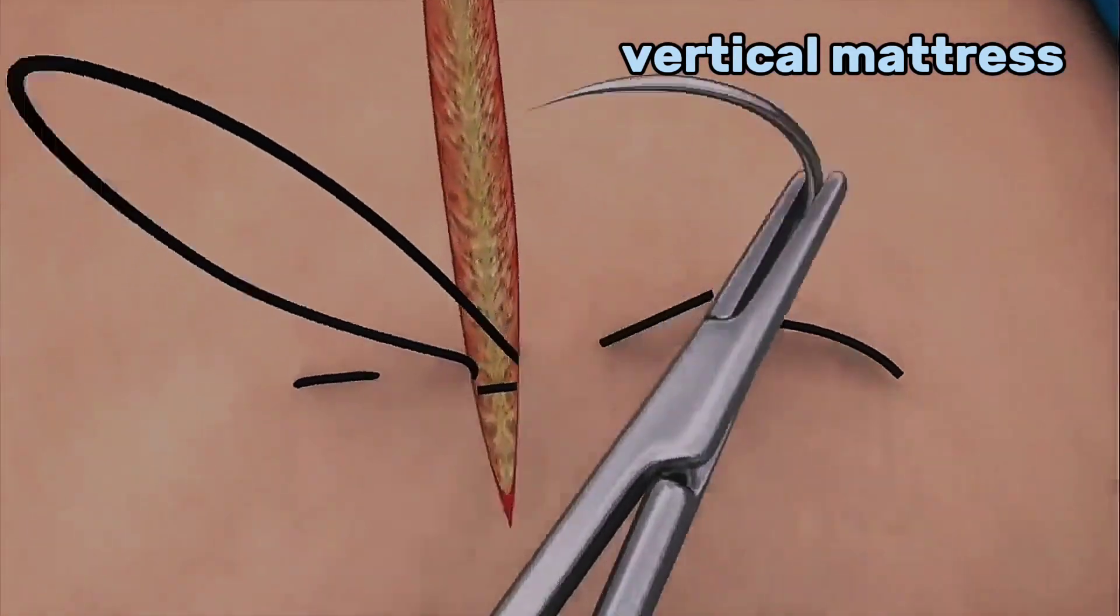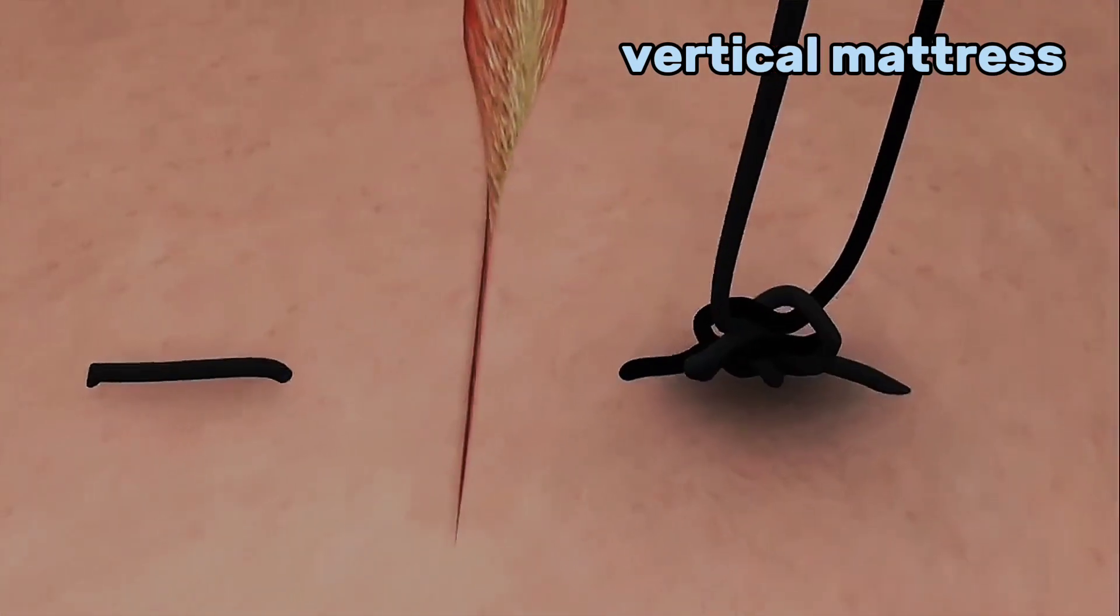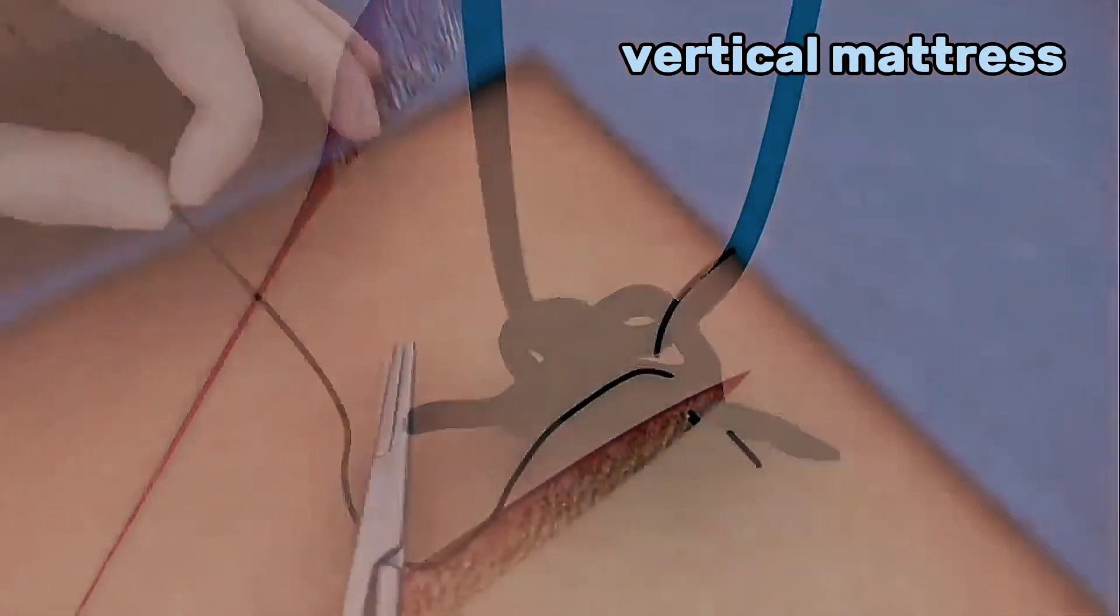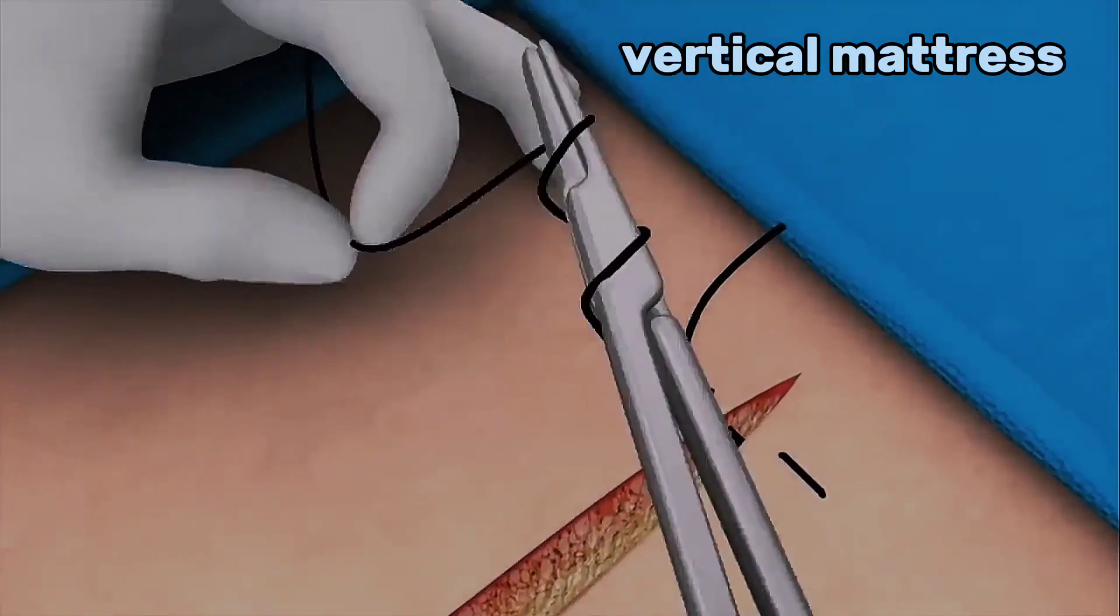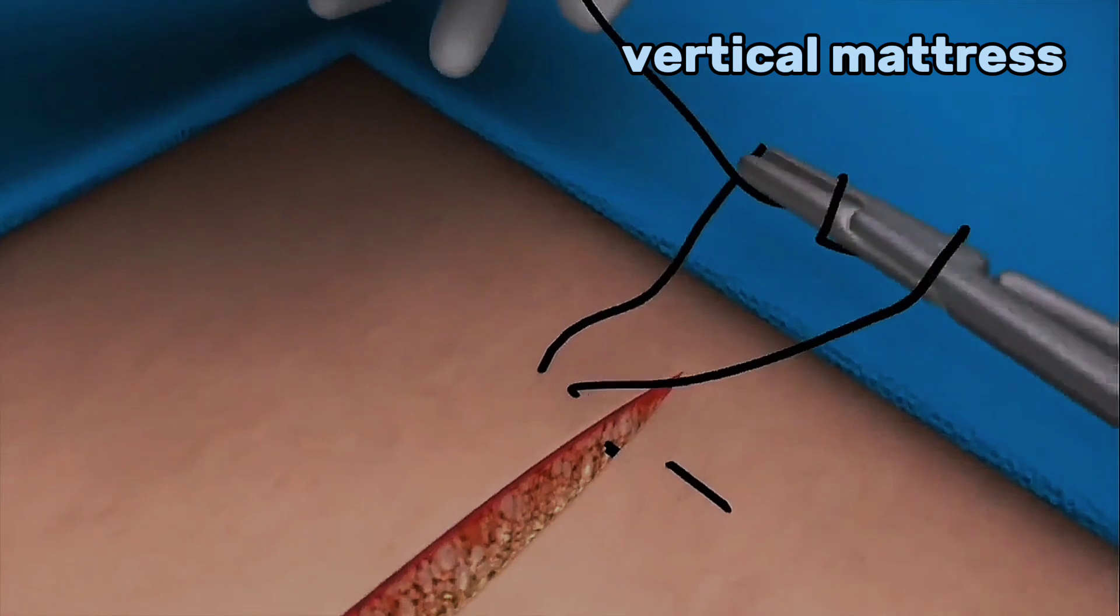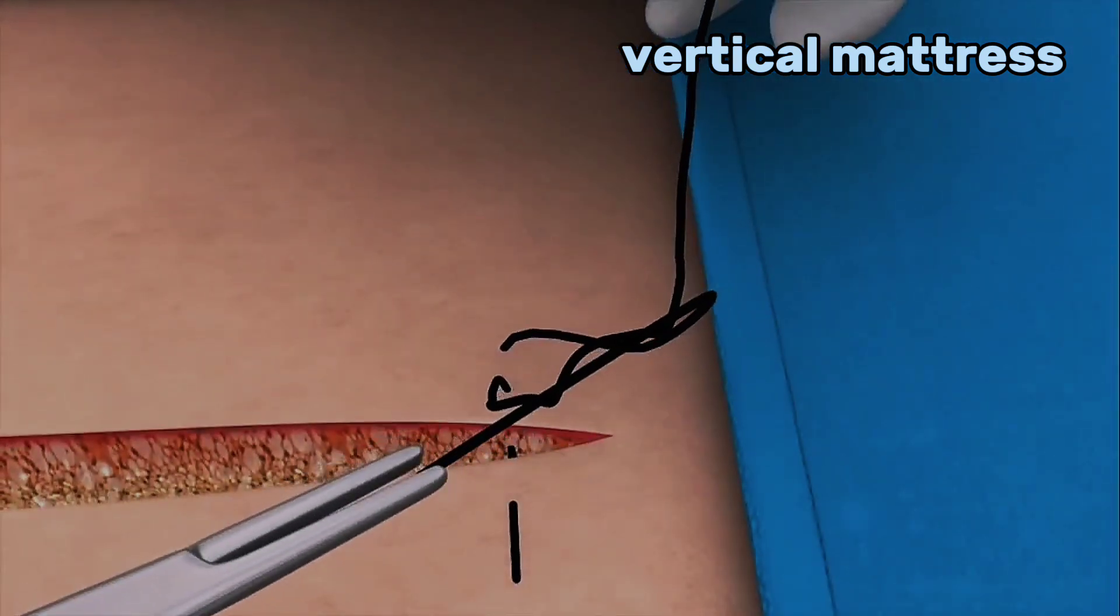Pull the suture through and tie a standard knot without excess tension. When tying the knot, make a double forward throw first by wrapping the suture twice around the tip of the needle holder. Grasp the end of the suture with the needle holder and pull it through the loops as shown.